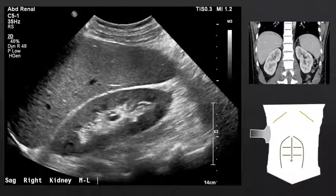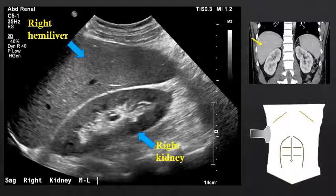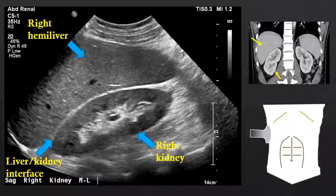If we move into a coronal orientation, we can see the liver-kidney interface extremely well. Superficial to the kidney in this orientation is the right hemiliver. We then see the right kidney deep to the right hemiliver. This liver-kidney interface view is important because it helps us assess the echogenicity of the kidney relative to the liver, which we will discuss in a future screencast.